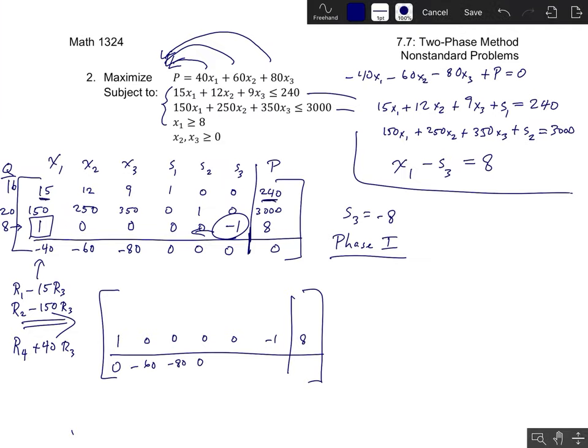So the pivot row still looks like that. And the resulting other rows are going to look like this. So I have a 0, negative 60, negative 80, 0, 0, negative 40, 320 as my bottom row. And then for the other rows, what I have is a 0, 12, 9, 1, 0, 15, 120, and a 0, 250, 350, 0, 1, 150, 1800. So just trust me on those values. So this is what we get after pivoting.